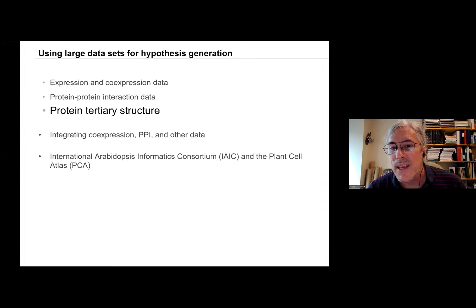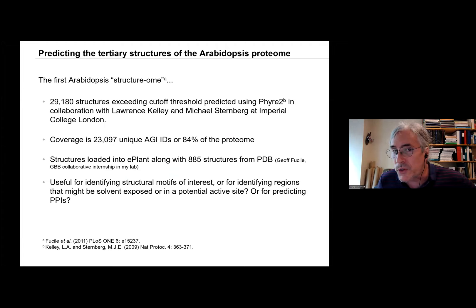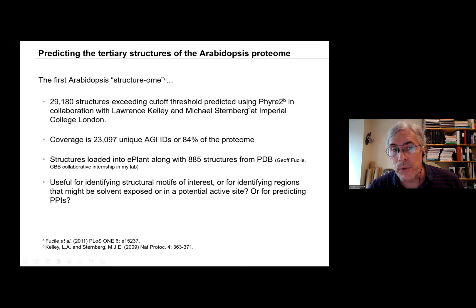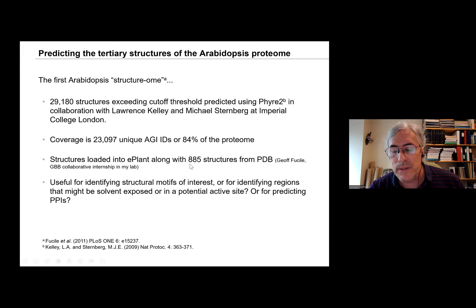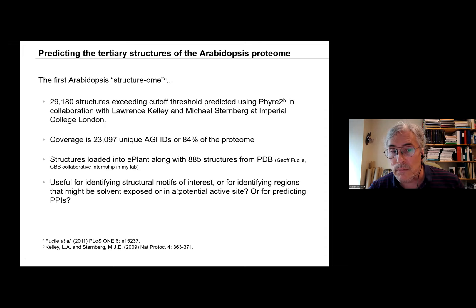Now switching to protein tertiary structure. We actually predicted the first Arabidopsis structurome 10 years ago, before AlphaFold was even a twinkle in Google's eye. We came up with 29,000 structures exceeding a cutoff threshold, predicted using PHYRE2 in collaboration with Lawrence Kelly and Michael Sternberg at ICL. That coverage encompasses about 23,000 unique AGIs, or 84% of the proteome. We've loaded those into ePlant, along with 885 structures from the PDB. The reason we did this was to identify structural motifs of interest, regions that might be solvent exposed or in the active site, or for predicting protein-protein interactions.